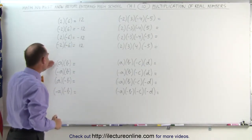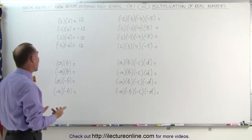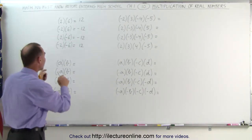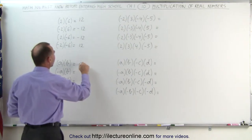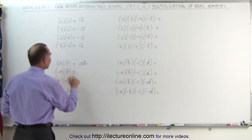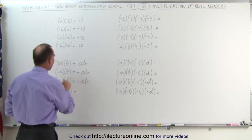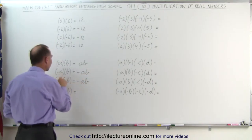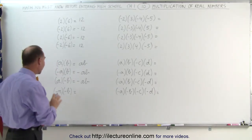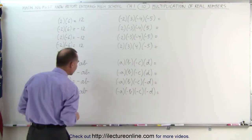Instead of numbers, if you use letters to represent numbers like a and b or x and y, the rule is the same. A times b — if they're both positive the answer will be a times b. If one of them is negative, that will be negative ab, and it doesn't matter if a is negative or b is negative. And when both are negative, minus a times minus b gives you a positive ab.